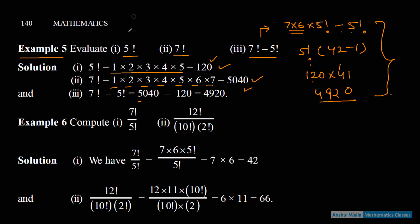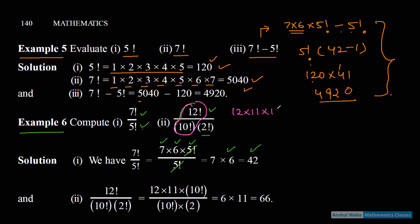Example 6 — compute 7!/5!: बेहतर है कि 7 factorial में 7×6 लिखो, फिर 5 factorial बचेगा — 5 factorial cancel हो जाएगा। So 7×6 = 42 answer है। Next: 12!/(10! × 2!): 12 factorial में 12×11 बाहर निकालो, फिर 10 factorial बचेगा। नीचे 10 factorial × 2 — 10 factorial cut हो जाएगा, (12×11)/2 = 66 answer।